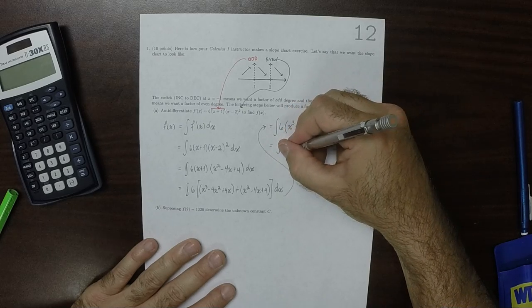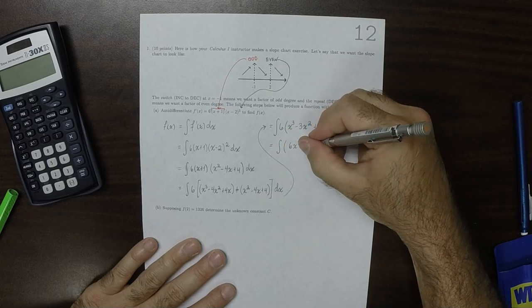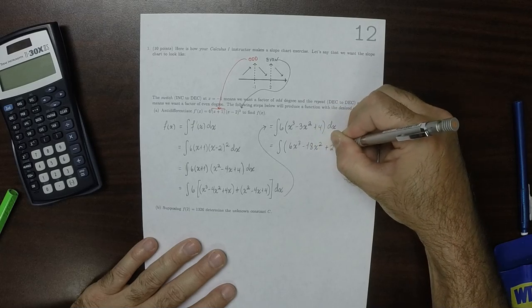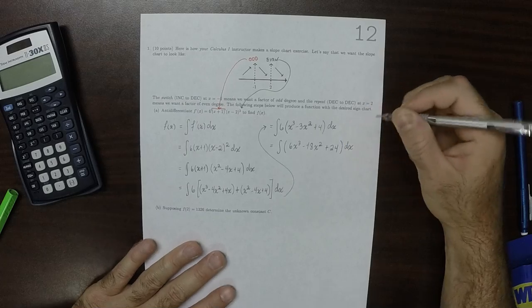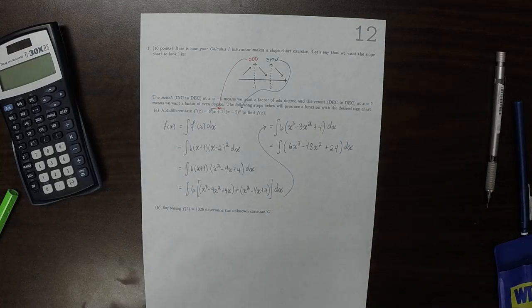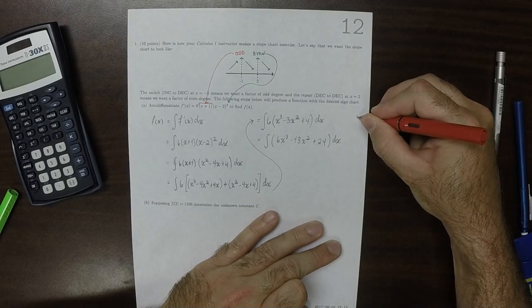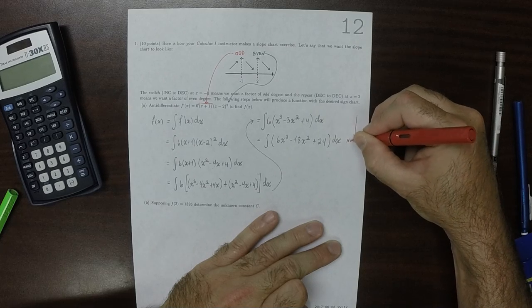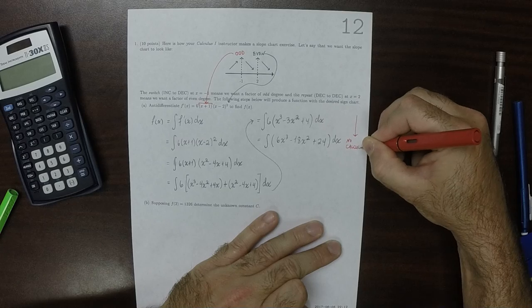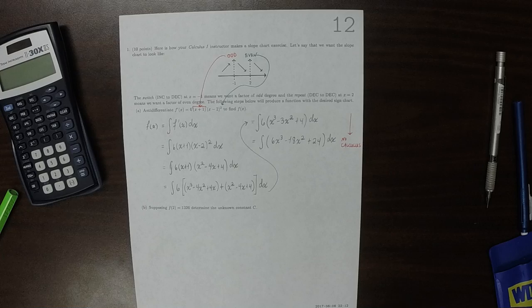So now I'll distribute the 6. So this is 6x cubed minus 18x squared plus 24 dx. So notably, no calculus to this point right here. All of this work, there has been no calculus. All of that was an algebraic simplification.